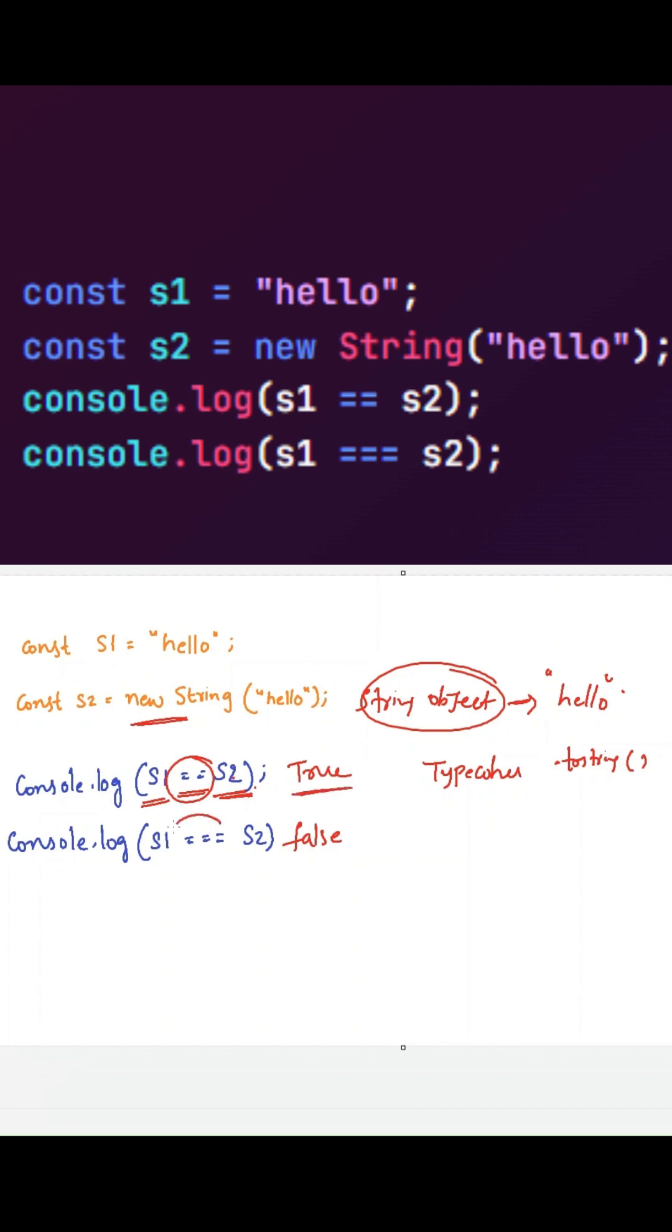Whereas here, we are using triple equal to operator. So triple equal to operator will not do any type coercion and will not apply any .toString() method. So it will check only if the data types are the same or not and if the values are the same or not.